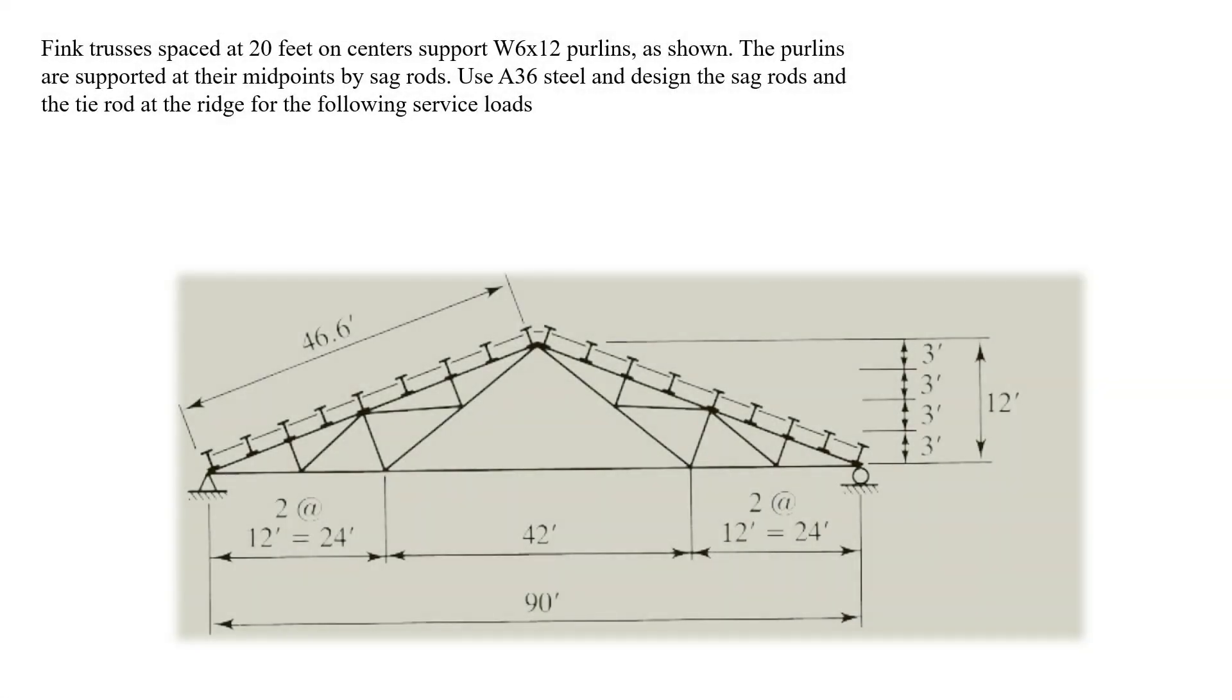Let's design a sag rod together based on a real example. Fink trusses spaced at 20 feet on centers support W6 by 12 purlins as shown. The purlins are supported at their midpoints by sag rods. Use A36 steel and design the sag rods and the tie rod at the ridge for the following service loads.